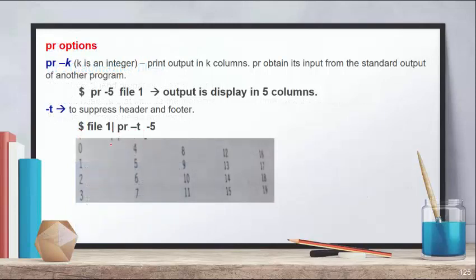With PR you can perform different operations using different options. The first option is PR minus K, where K is an integer value. When you write an integer value, it will print the output in K columns. For example, writing PR -K followed by an integer value and the file name will display your output distributed into that many columns.